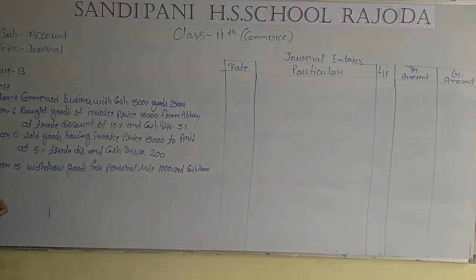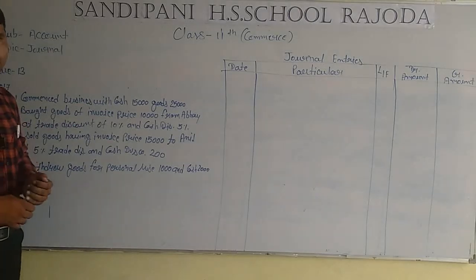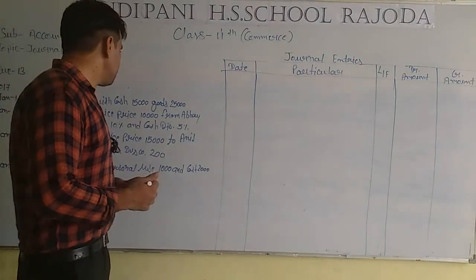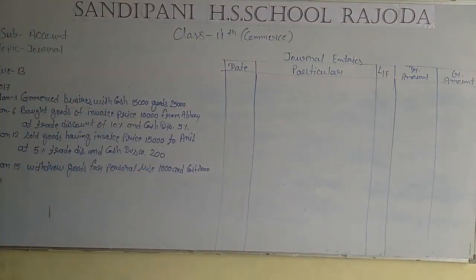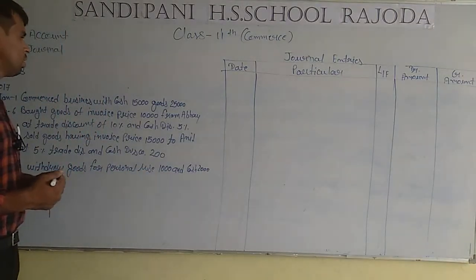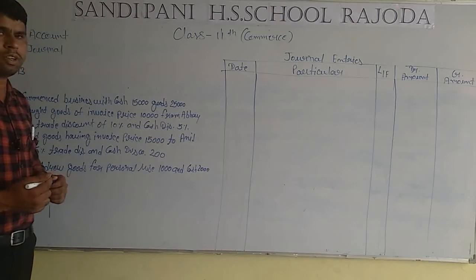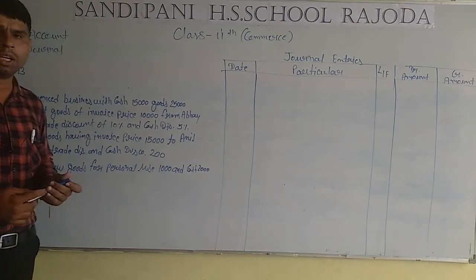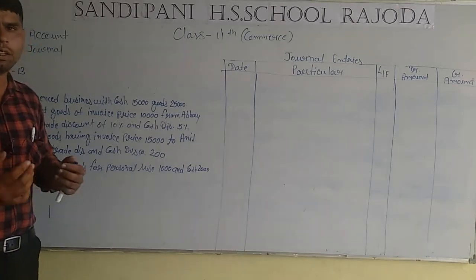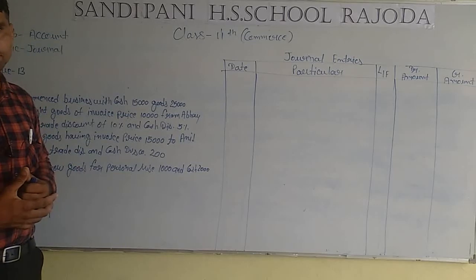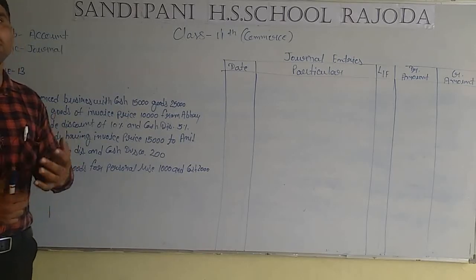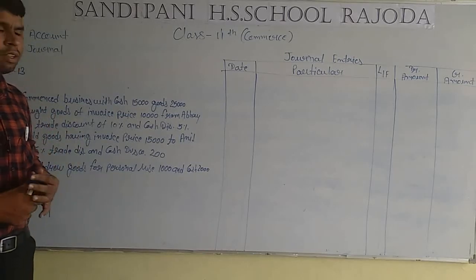Now we have to make the general journal entry for this question. First of all, it is given that business is commenced with cash 15,000 and goods 25,000. This means cash and goods are coming in. From where? From the proprietor.